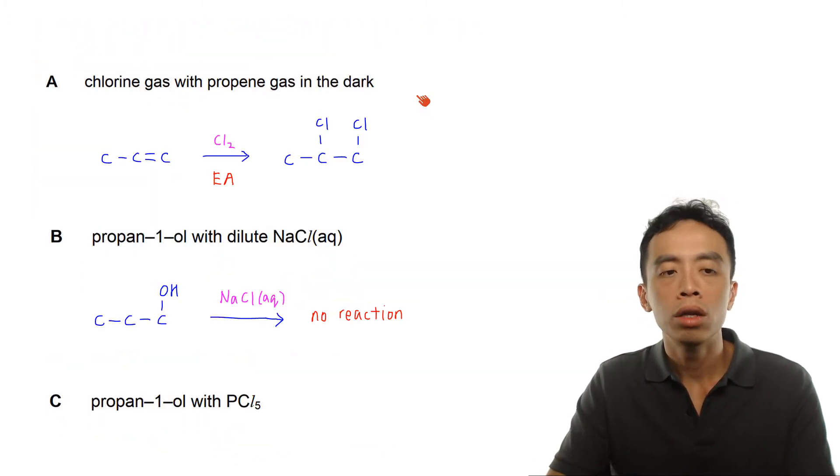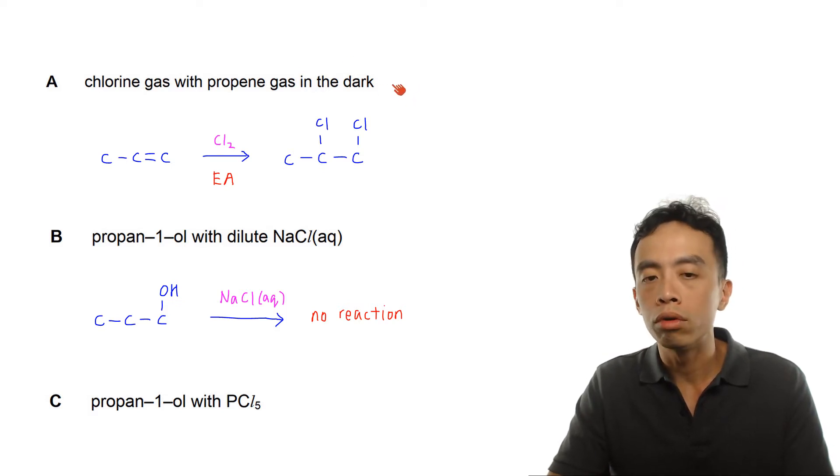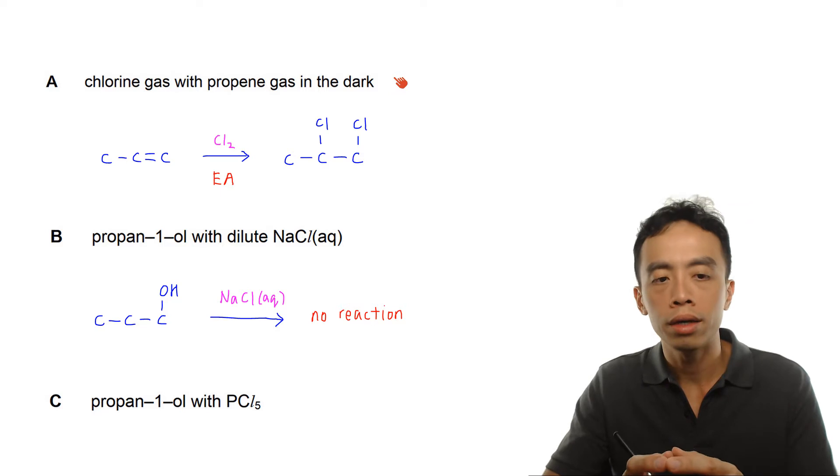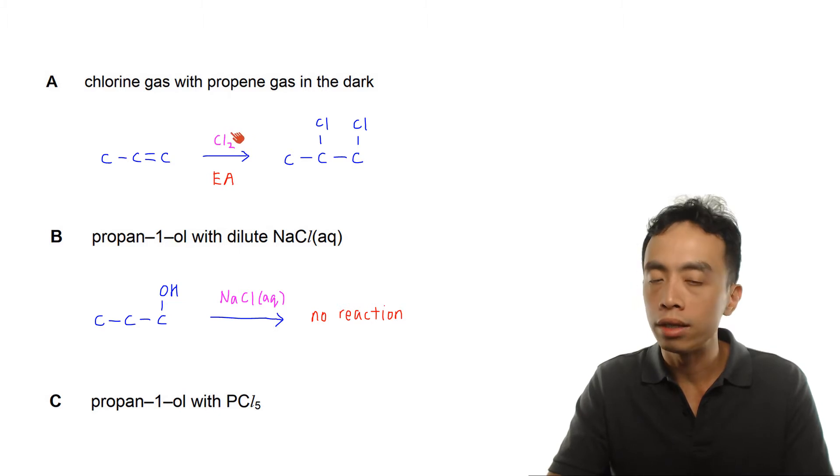Now option A, chlorine gas with propene gas in the dark. If I consider propene, which is an alkene, and react this with chlorine gas in the dark, then the expected product will be 2 chlorines being added to my alkene functional group. So I'll end up with 1,2-dichloropropane.